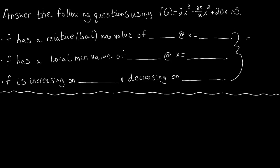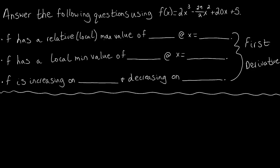All three of these really have to do with the first derivative. And more specifically, we're not dealing with just the first derivative — we're going to be dealing with critical points of the first derivative. Local maxes and mins can only occur at critical points of our function, where the derivative equals zero. And the intervals where f is increasing and decreasing are actually going to be broken up by those critical points.